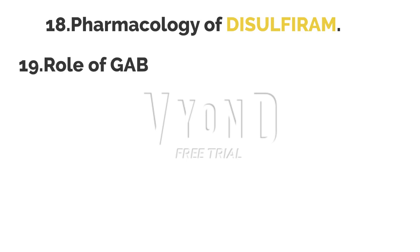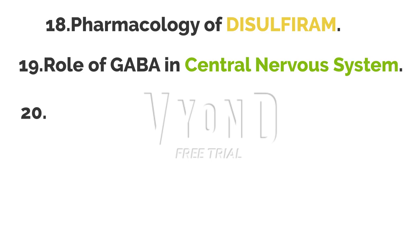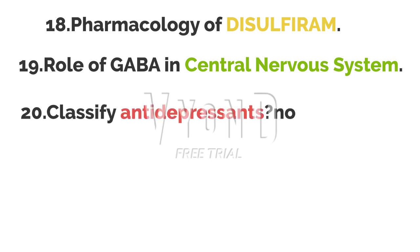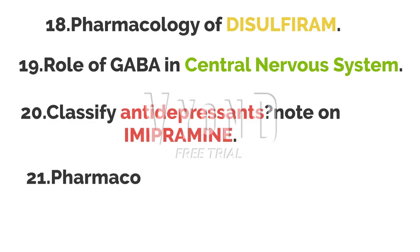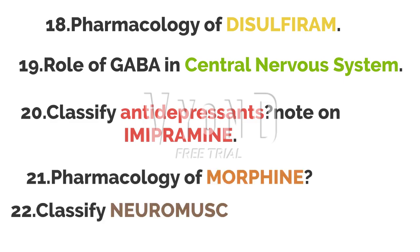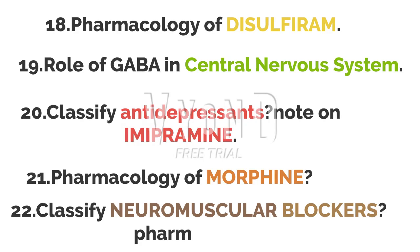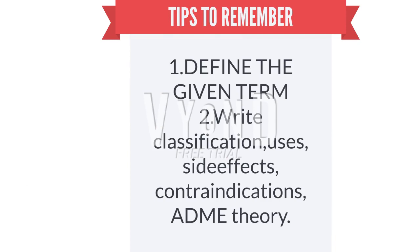Eighteenth question: pharmacology of disulfiram. Nineteenth: role of GABA in the central nervous system. Twentieth: classify antidepressants and write a note on imipramine. Twenty-first: pharmacology of morphine. Twenty-second: classify neuromuscular blockers and write the pharmacology of neuromuscular blockers.